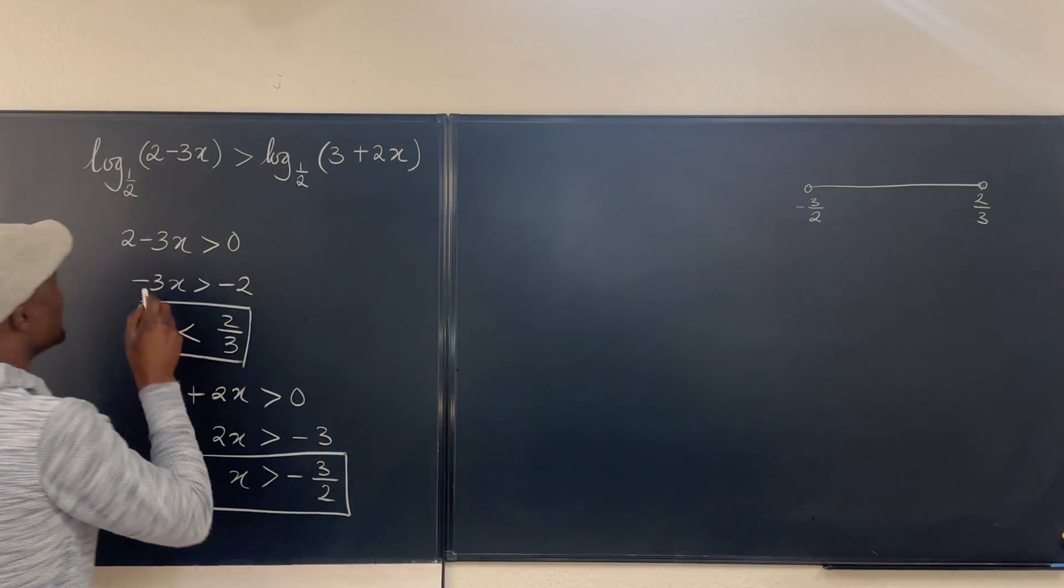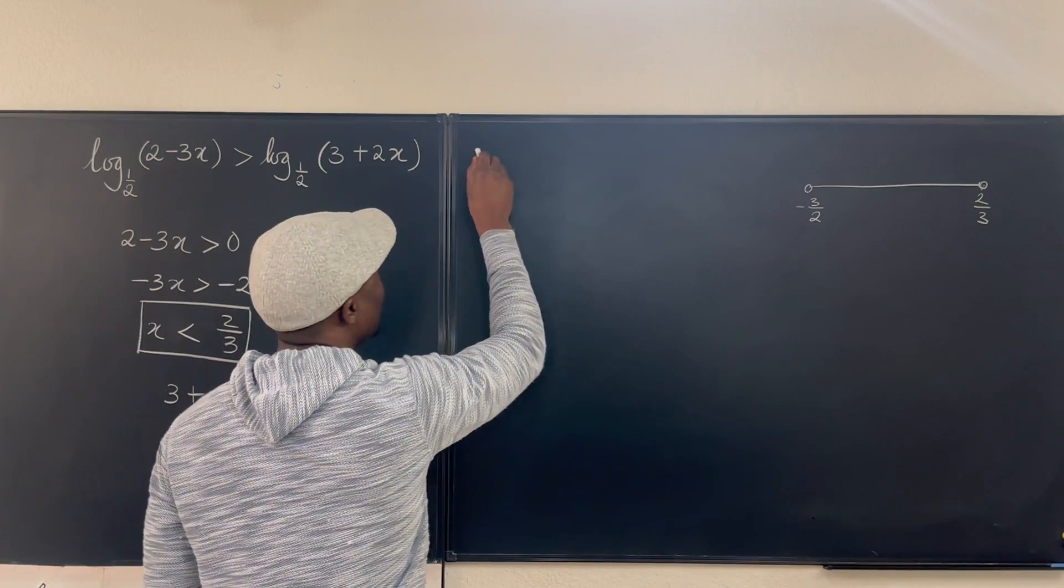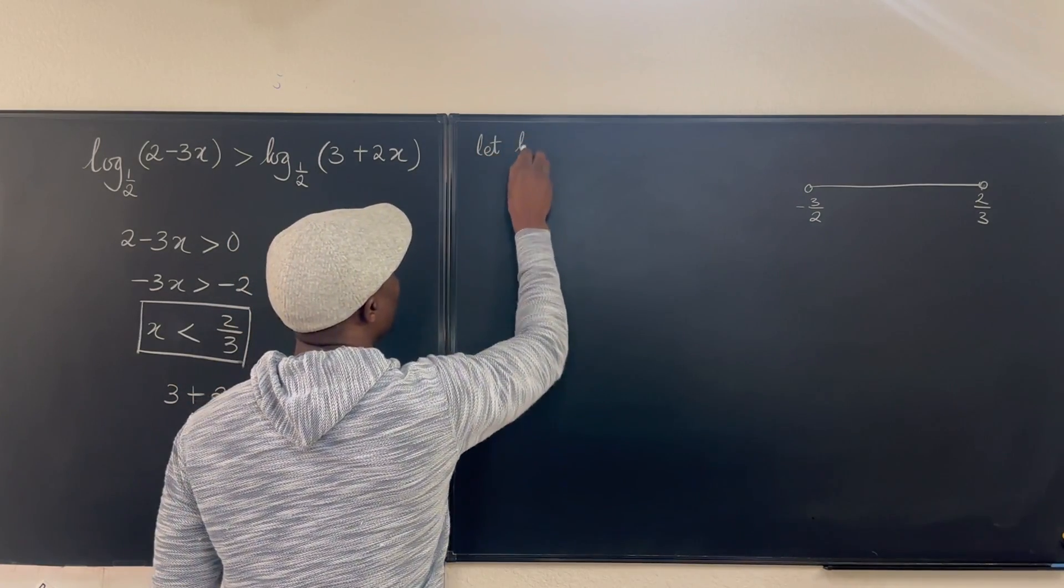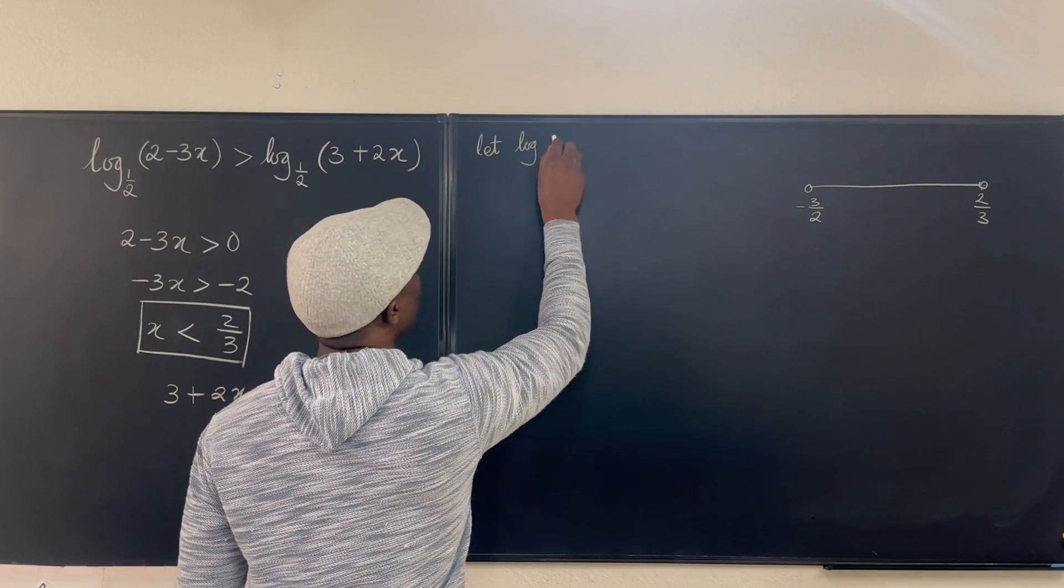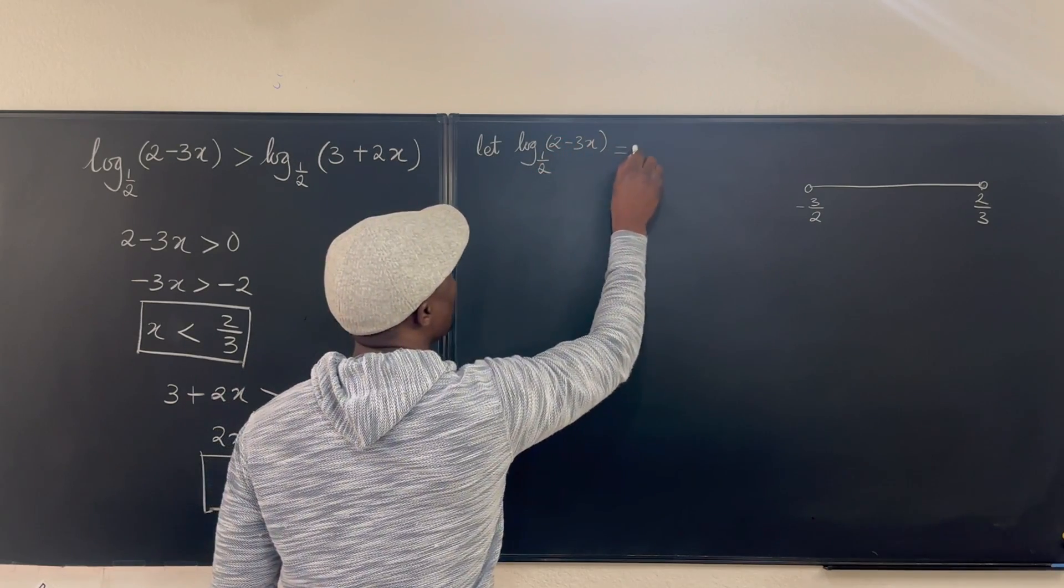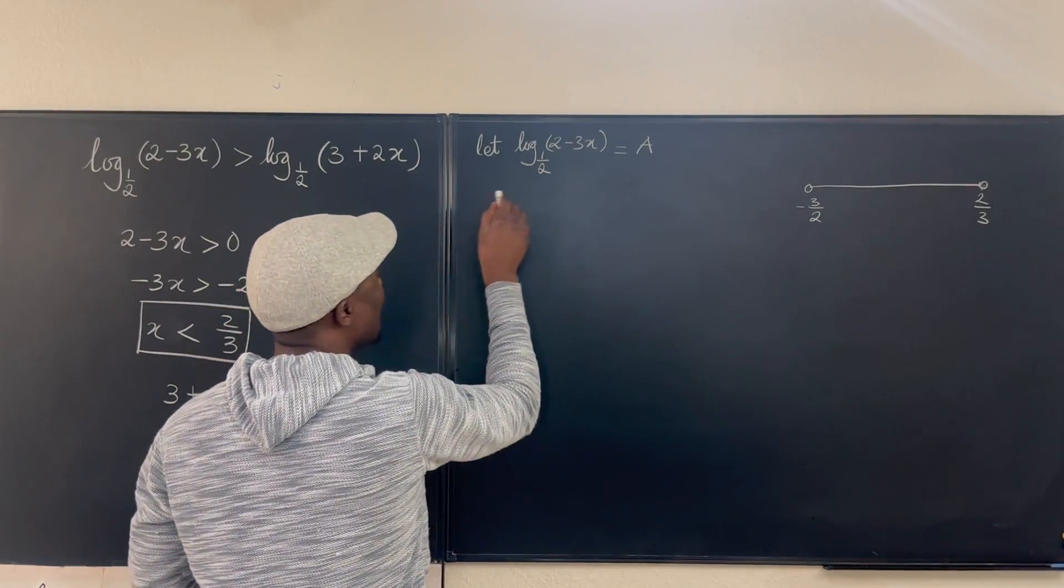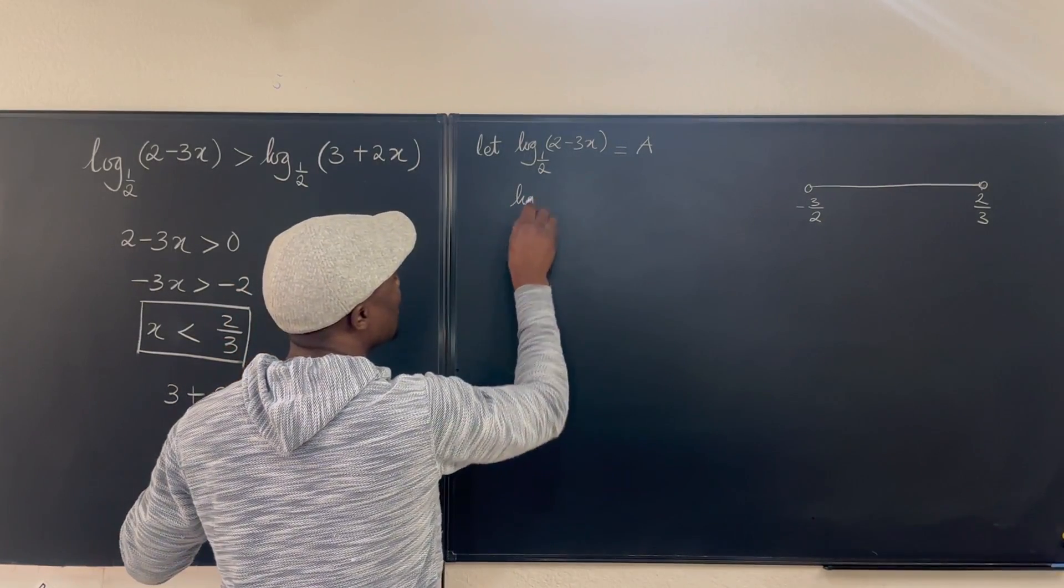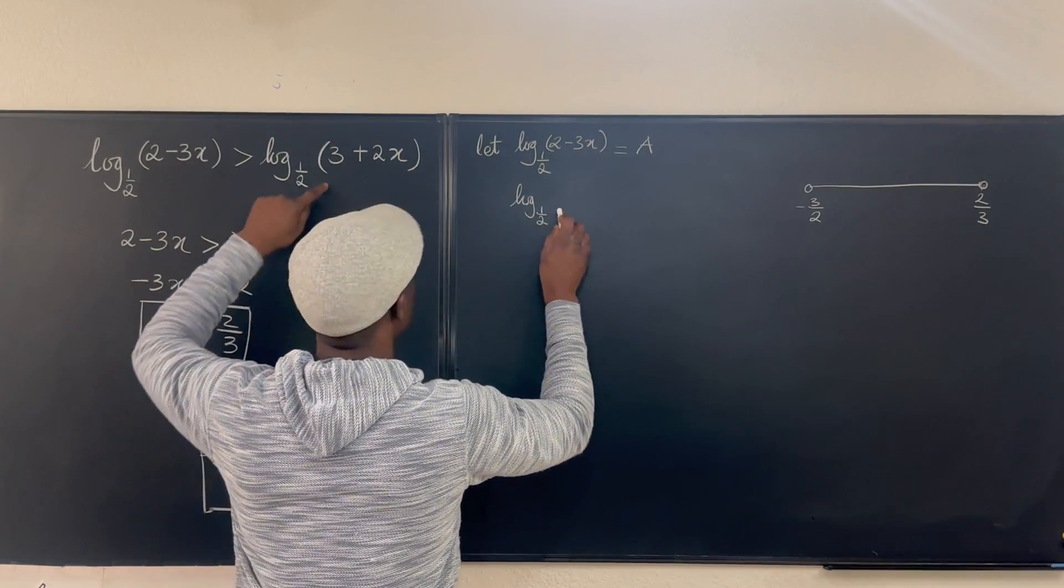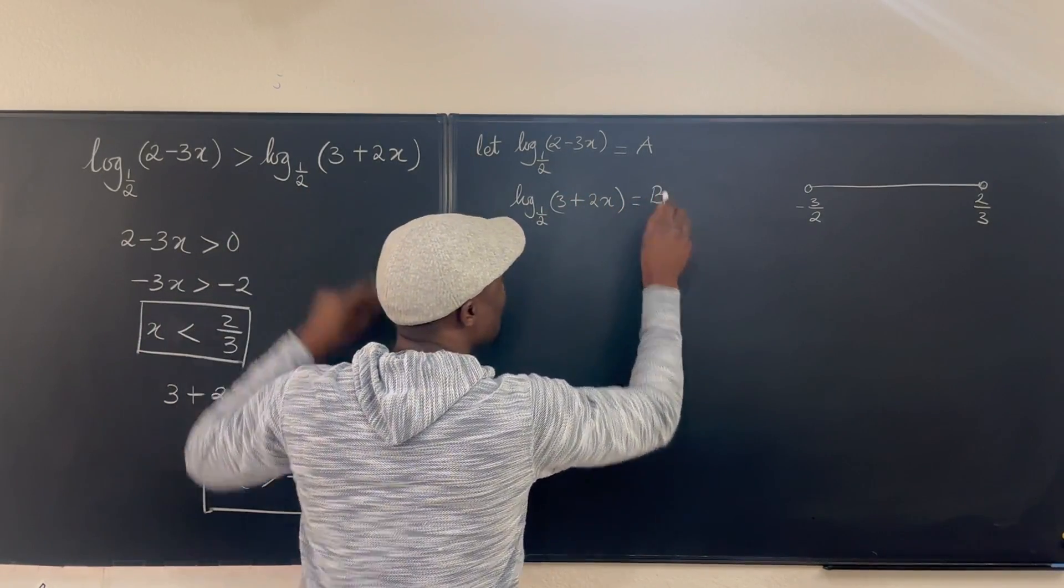I want you to look at the left hand side here and call it A. So let's do it this way. Let the logarithm of 2 minus 3x base one half let it be equal to A, and let the other one, let the logarithm base one half of 3 plus 2x, let it be equal to B.